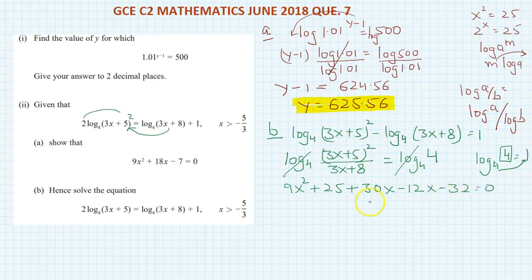So I can simplify it as 9x squared, 30x minus 12x plus 18x, plus 25 minus 32 is minus 7 equals 0, and that is what we are supposed to prove.